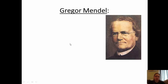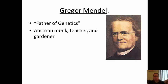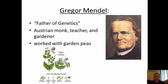Continuing with our genes discussion, we have our famous scientist Gregor Mendel, who is considered the father of genetics. He was an Austrian monk, teacher, and gardener who worked with garden peas. He studied different traits such as tall plants versus short plants, whether seed pods were plump versus wrinkled, whether peas were round or wrinkled, whether they were green or yellow, whether the pod color was green or yellow, and whether the flower was white or purple.